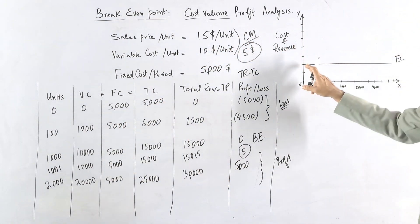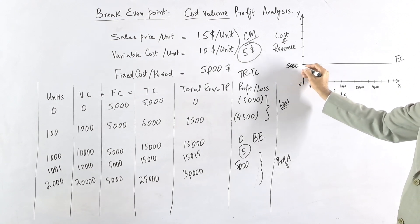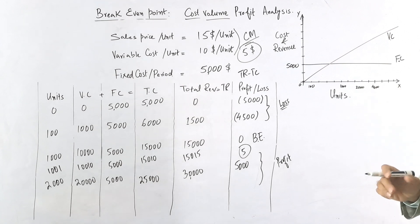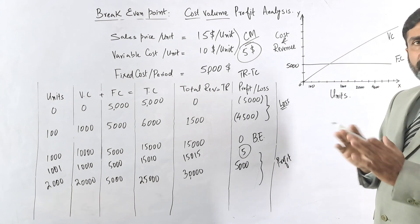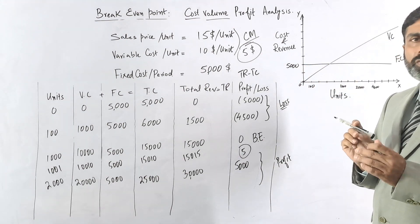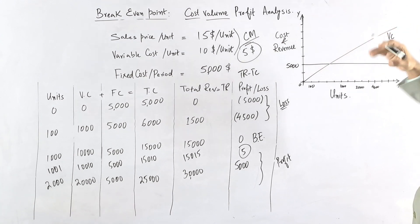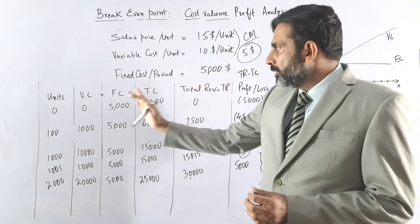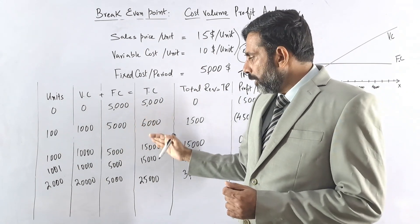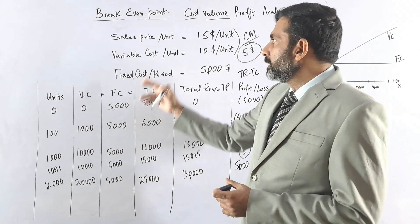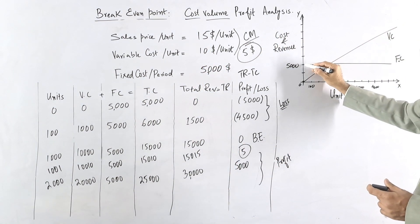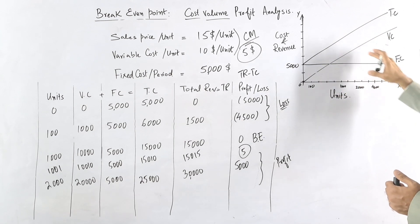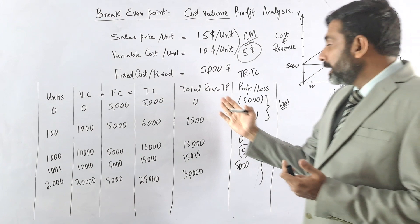The variable cost starts from zero and gradually increases, so it starts at the origin and slopes upward. The total cost is the combination of fixed and variable cost — it starts from $5,000 (the fixed cost level) and increases by $10 per unit, running parallel to the variable cost line but shifted up by $5,000.